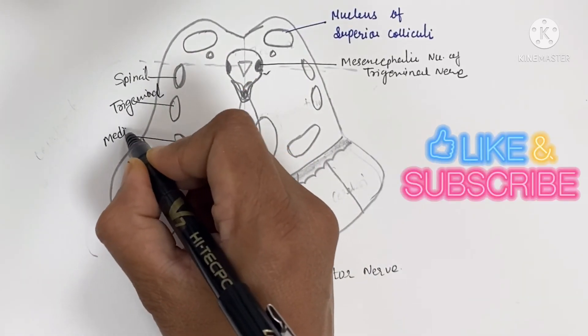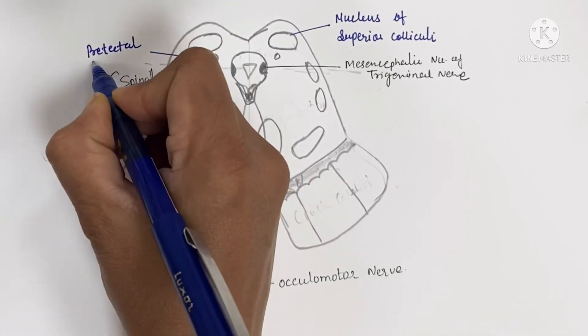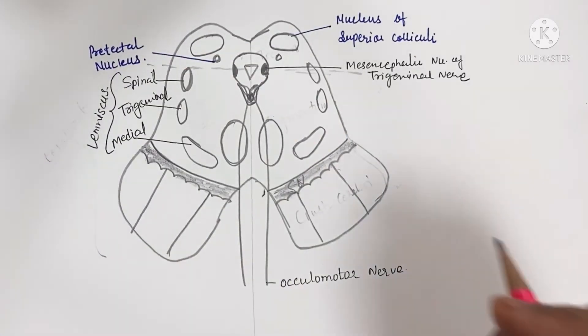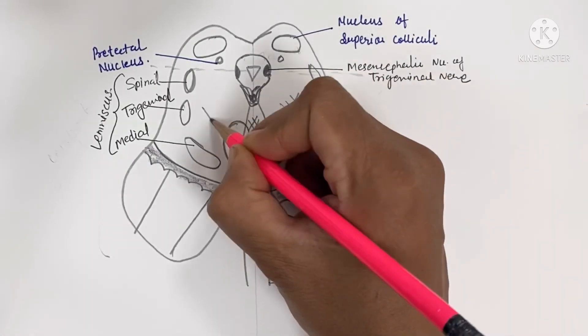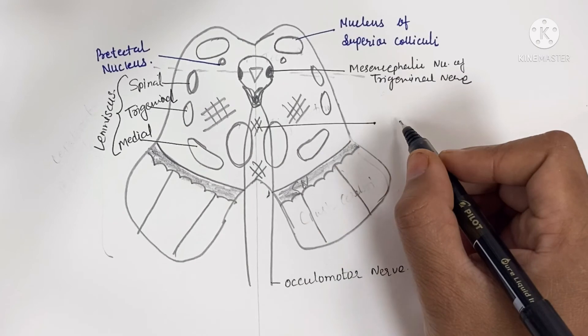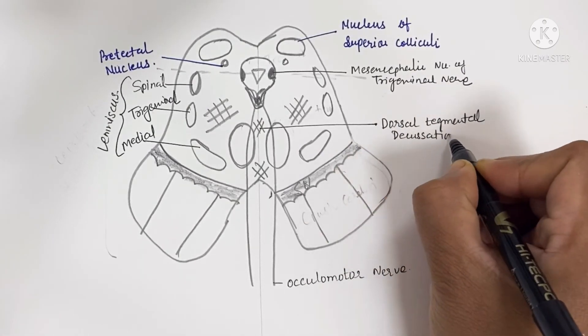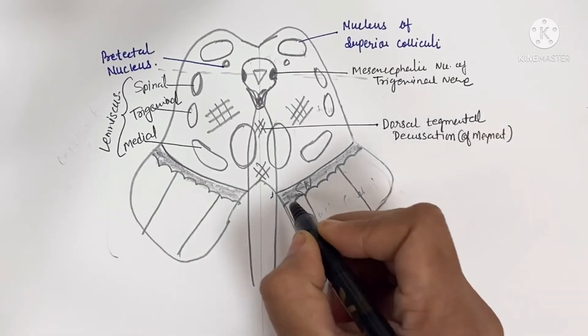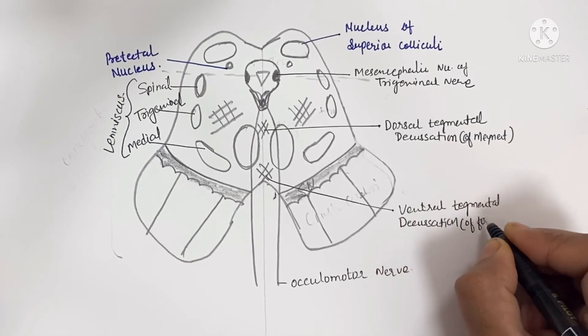The lateral lemniscus terminates in the nucleus of the inferior colliculus, so at this level it is not present here. There is the pre-tectal nucleus and dorsal tegmental decussation of Meynert with fibers arising from the superior colliculi, and ventral tegmental decussation of Forel with fibers arising from the red nucleus.